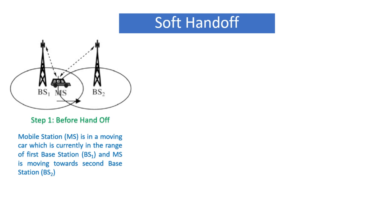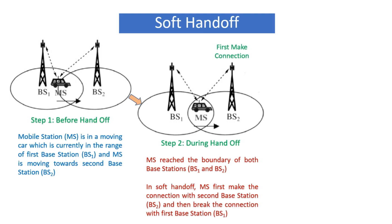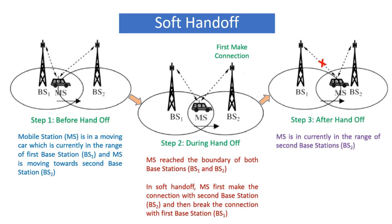Next is soft handoff. Step 1 — before handoff: the mobile station is in a moving car which is currently in the range of BS1 and is moving towards BS2. Step 2 — during handoff: the mobile station has reached the boundary of both base stations BS1 and BS2. In soft handoff, the mobile station first makes the connection with the second base station BS2 and then breaks the connection with the first base station BS1. That's why soft handoff is called make before break. Step 3 — after handoff: the mobile station is now in the range of the second base station BS2.